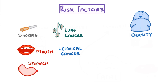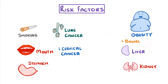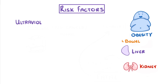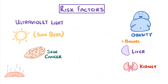Obesity has also been linked to multiple cancers, including bowel, liver and kidney cancer. Meanwhile, ultraviolet light exposure, which we get from both the sun and from sun beds, is strongly linked to skin cancer, because the UV radiation can damage our skin cells.